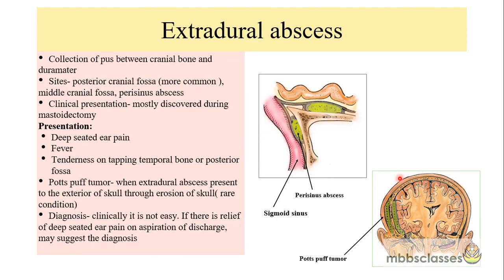Extradural abscess is the collection of pus between the cranial bones and the dura mater. The location could be in the posterior cranial fossa, middle cranial fossa, or it could be the perisinus abscess, which is the beginning point for sigmoid sinus thrombosis. In the diagram, this is the cranial bone, this is the overlying dura, and this is the brain tissue — there is a collection of pus between the bones and the dura mater. The perisinus abscess is again a type of extradural abscess.